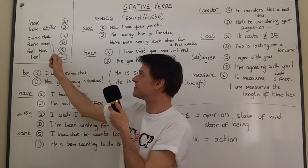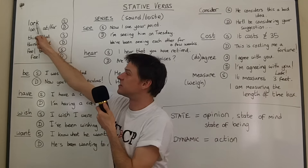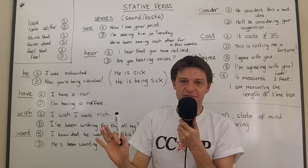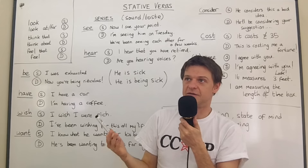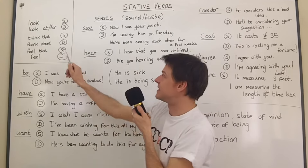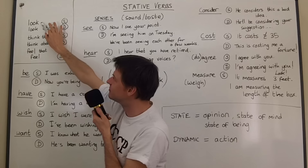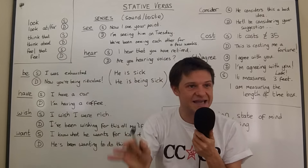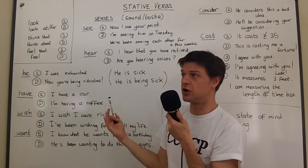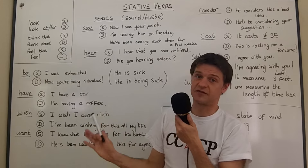How something looks is a quality of its being — it's how it exists. So we just say 'it looks terrible' or 'it looks great.' You will sometimes hear people say 'she is looking gorgeous,' and it sounds correct in some cases. But in others it's wrong — for example, you would always say 'he looks French' or 'she looks German,' never 'is looking.'